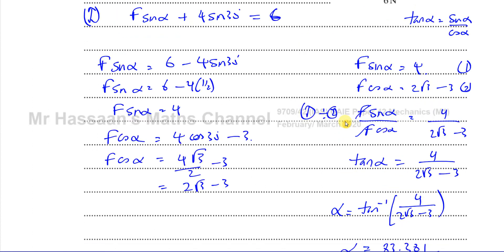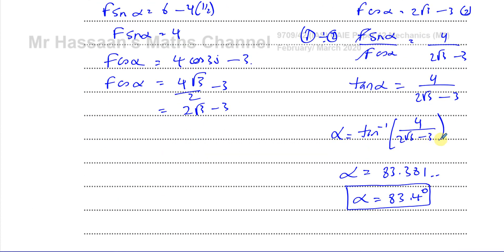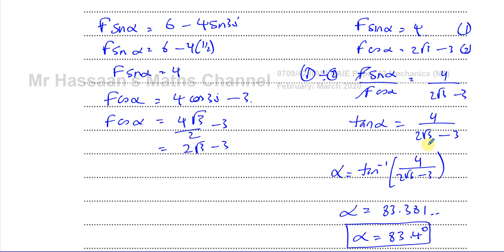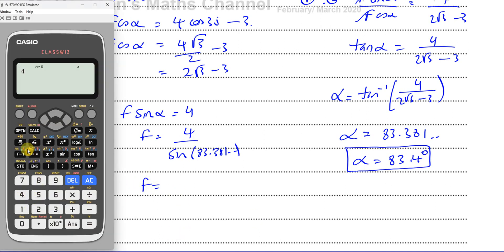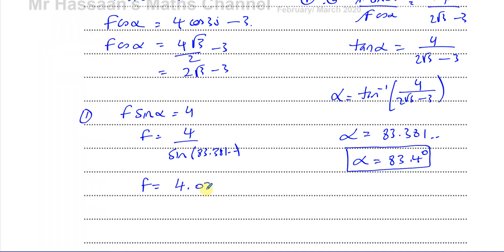Now we find F using one of our two equations. From F sine alpha equals four, we get F equals four over sine of 83.381 degrees. Using the exact stored value from the calculator, that gives F equals 4.0268, so F equals 4.03 Newtons to three significant figures. So there we have both F and alpha, and the question is answered.